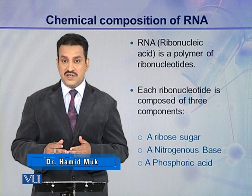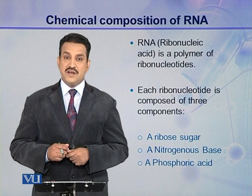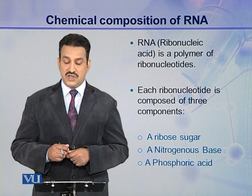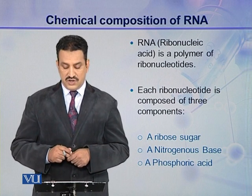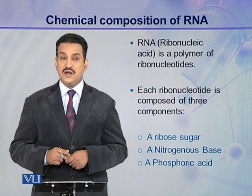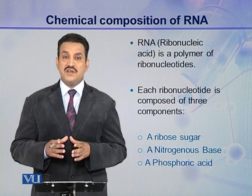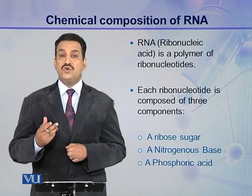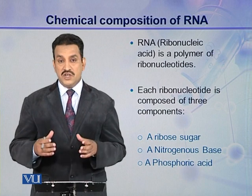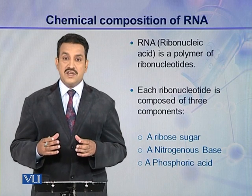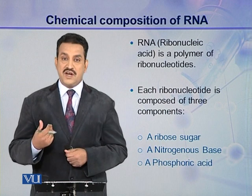Each ribonucleotide is made up of three components, and these three components include ribose sugar, a nitrogenous base, and phosphoric acid. These three components join together and make a ribonucleotide. Different ribonucleotides join together and make a polynucleotide, which is ribonucleic acid.